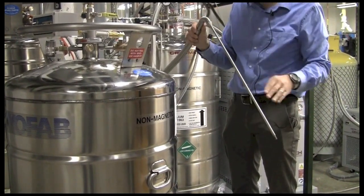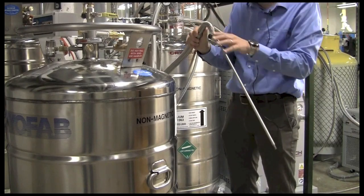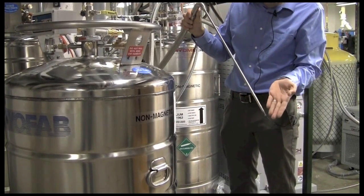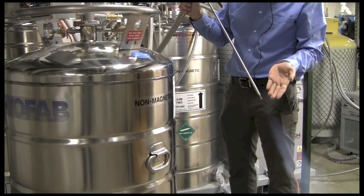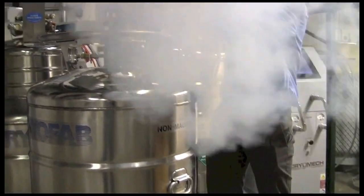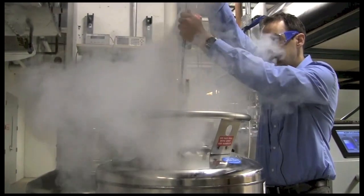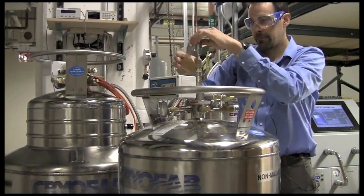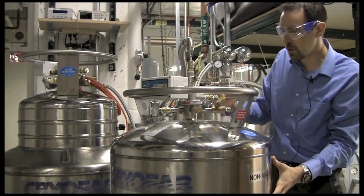So right now the helium is cooling down the center of the transfer line and when it's completely cooled down then we'll start to see a plume at the end which indicates that liquid helium is coming out. When we have the plume then we can put it into the transport dewar and we can collect helium in the transport dewar.